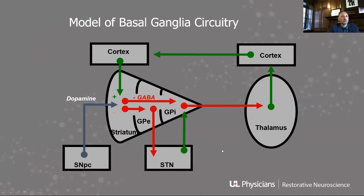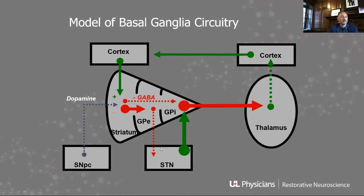You guys have all learned this wiring diagram — this is familiar to people in one shape or form. This is why we think this works: you have this pathway through the nuclei of the basal ganglia, a direct and an indirect pathway. When you have Parkinson's disease, there is an imbalance between these two pathways, with the indirect pathway becoming overactive, the STN and GPi firing too aggressively, and ultimately suppressing activation from the thalamus to the cortex.